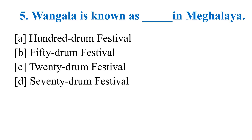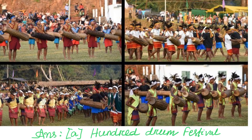Question number 5: Vangala is known as the dash in Meghalaya — option A: 100 drum festival, option B: 15 drum festival, option C: 20 drum festival, option D: 70 drum festival. In Vangala, there are two parallel lines, one for men and one for women, and only the men beat the drums. All of you have given the right answer — option A: 100 drum festival. Vangala is known as the 100 drum festival.